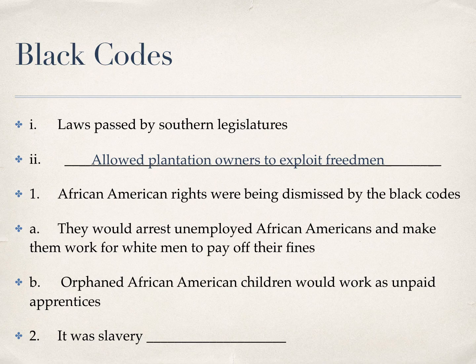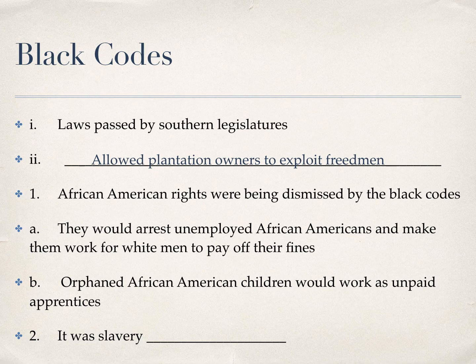Black codes allowed plantation owners to take advantage of these newly freed slaves. For example, if you were an unemployed African American, they would arrest you and say you had to pay a fine. If you're unemployed, you don't have money to pay a fine. So they said if you work for this plantation owner for a certain amount of time, it will make up for your fine. Or orphan African American children would work as unpaid apprentices. This is slavery in disguise — a form of slavery without calling it slavery. That is what black codes allowed southern states to do under Andrew Johnson.